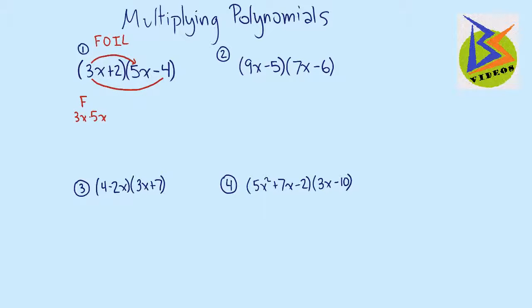Then we do the outer terms, which is 3x times negative 4. Then we do the inner terms, 2 times 5x. And then it's the last terms, 2 times negative 4. And so we can multiply this, which is 15x squared minus 12x plus 10x minus 8.